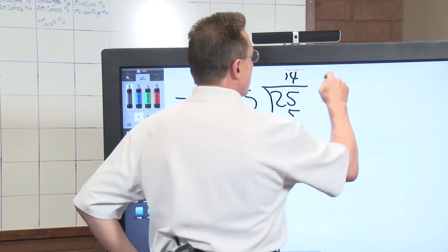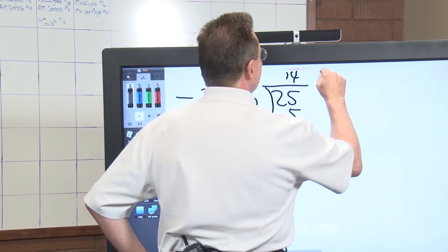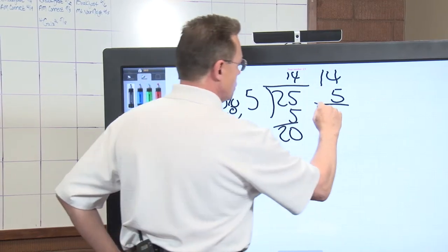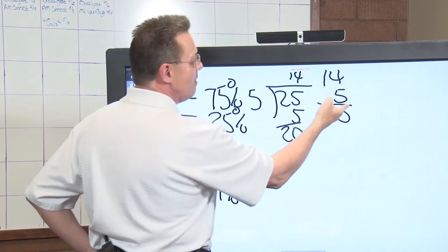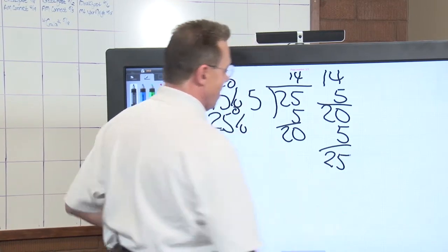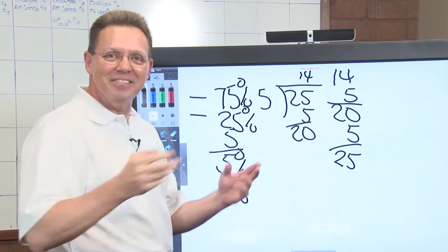And he said, well, let's try to check our math. And so he said, let's do 14 times five. Five times four is 20. And five times one is five, 25. That's the second time he checked his work.